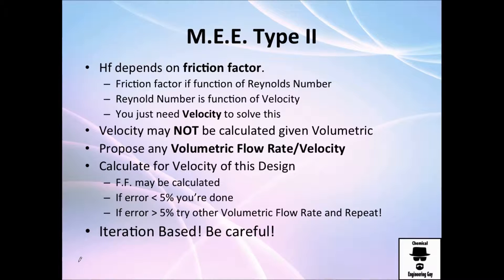Now let's do an example of type number 2. The thing here is that the energy loss due to friction depends on the friction factor and on the velocity head. The friction factor is function of Reynolds number which at the same time is function of velocity, so we need velocity to solve the friction loss. Velocity may not be calculated because we don't have the volumetric flow rate, that's actually the question. We need to find the volumetric flow rate and with that we will be able to find the velocity.